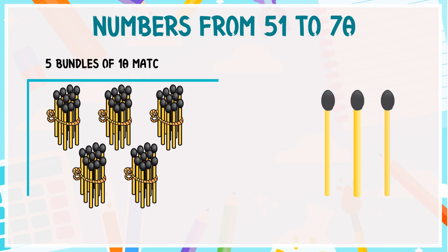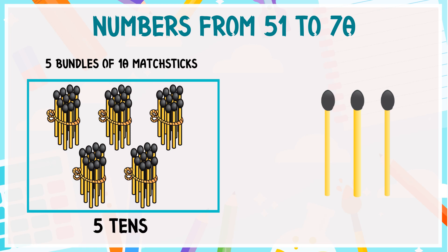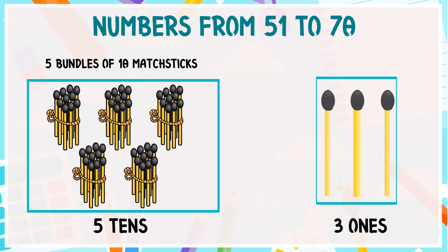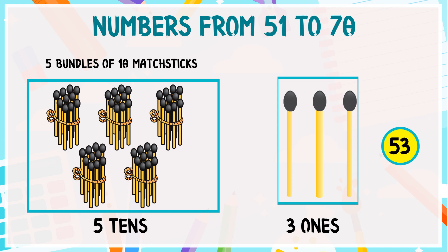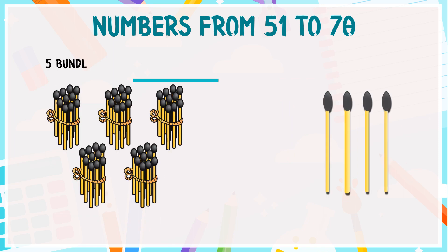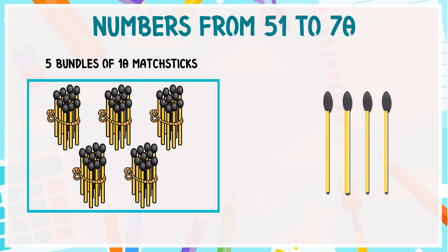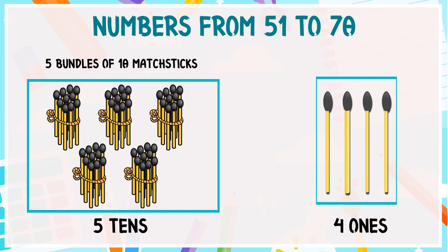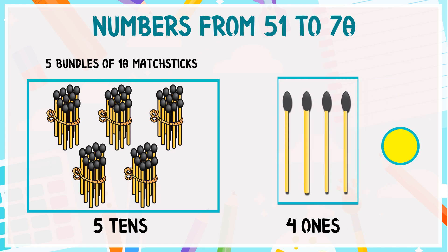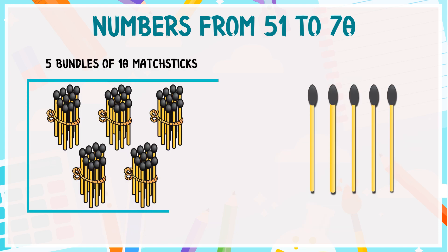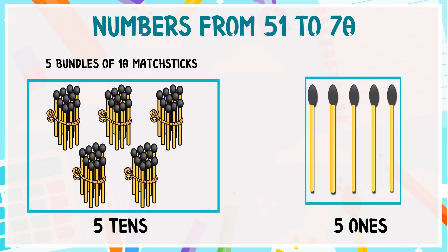Let's draw five bundles of ten matchsticks in each, so it will be five tens and three ones, so five tens and three ones is equal to 53. These are five bundles of ten matchsticks in each, so it is five tens and four ones, so five tens and four ones is equal to 54. These are five bundles of ten matchsticks in each, so it is five tens and five ones, so five tens and five ones is equal to 55.